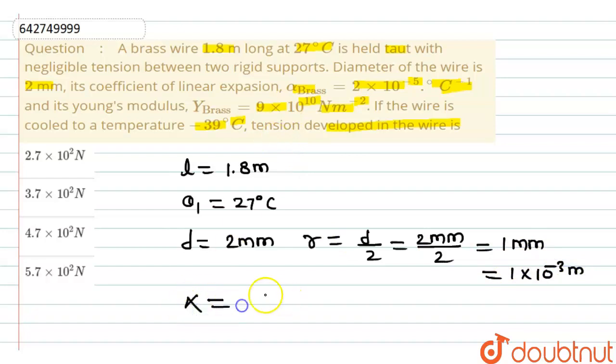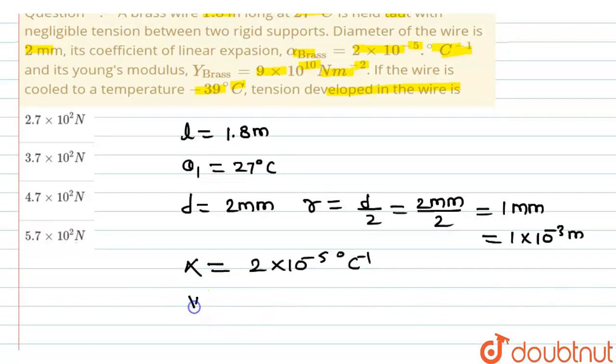The coefficient of linear expansion alpha is 2 into 10 raise to the power minus 5 per degree centigrade. And the value of Young's modulus of material of wire is 9 into 10 raise to the power 10 newton per meter square.